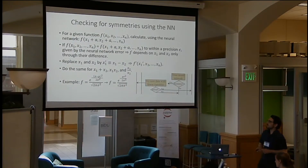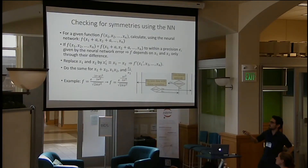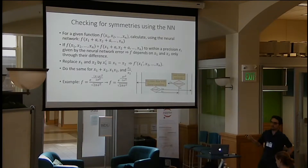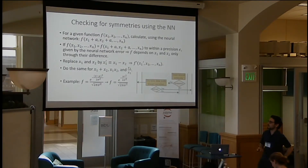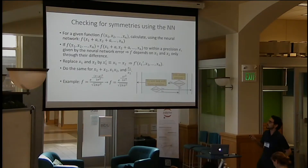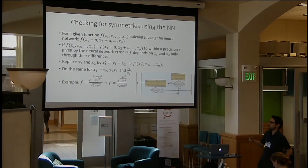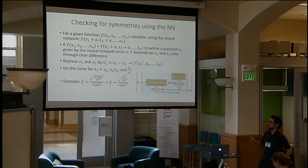The first thing we do with the neural network is to search for symmetries. Given a function of n variables, we calculate the value of the same function where the first two variables x1 and x2 are replaced with x1 plus a and x2 plus a, where a is a constant. If the function evaluated at these two points has the same value to within a precision epsilon given by the neural network error, it means that f depends on x1 and x2 only through their difference. We then replace these two variables with their difference, reducing the variable count, and repeat until no more translational symmetries are found. We do the same for the sum, product, and ratio of two variables.